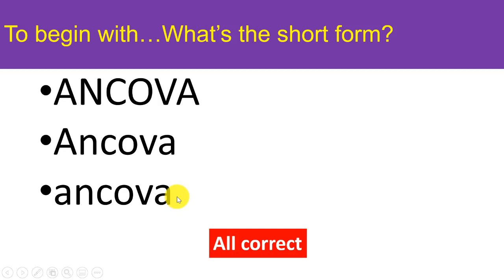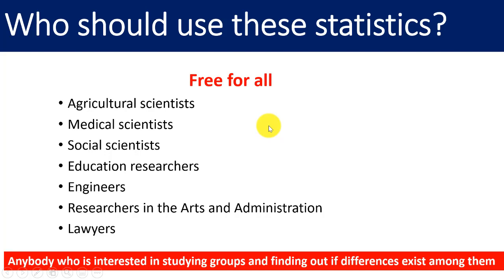So to begin with, what's the short form of analysis of covariance? It's ANCOVA — analysis of covariance. You can write it in full capitals, or with just the A capitalized, or all lowercase. All of these are correct, but usually in texts, when it's in the middle of a sentence you use the lowercase form, and when it starts a sentence you use the capitalized form.